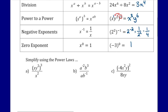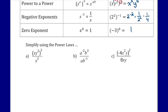Now let's simplify some more complex examples using these power laws. For a fraction, we want to simplify the top and bottom as much as possible, then handle the division. We have xy squared all to the power of 3 on top: this exponent 3 applies to everything inside. x to the power of 1 to the power of 3 becomes x cubed, and y squared to the power of 3 becomes y to the power of 6. This is all divided by x squared.